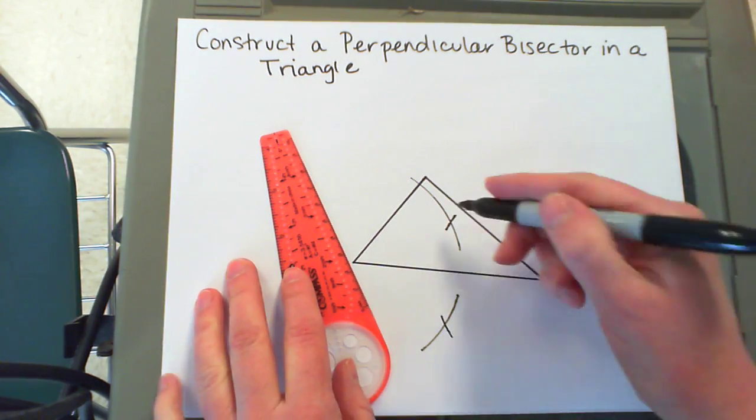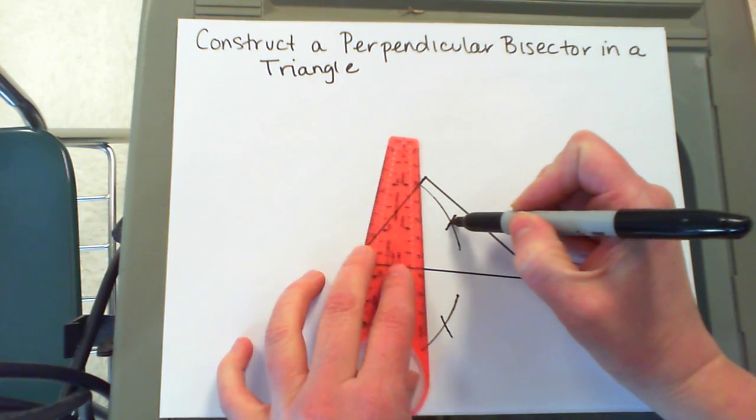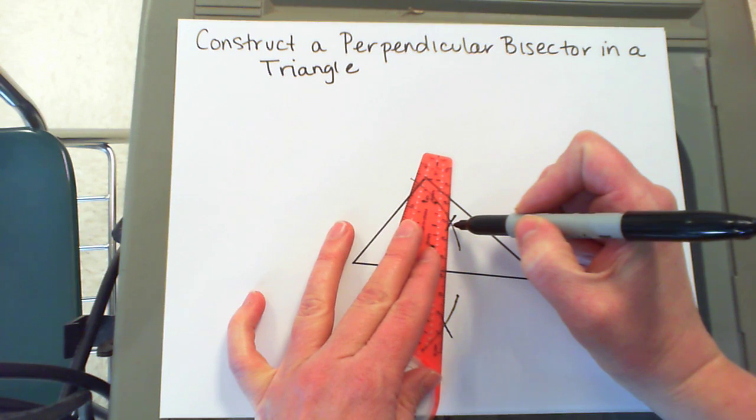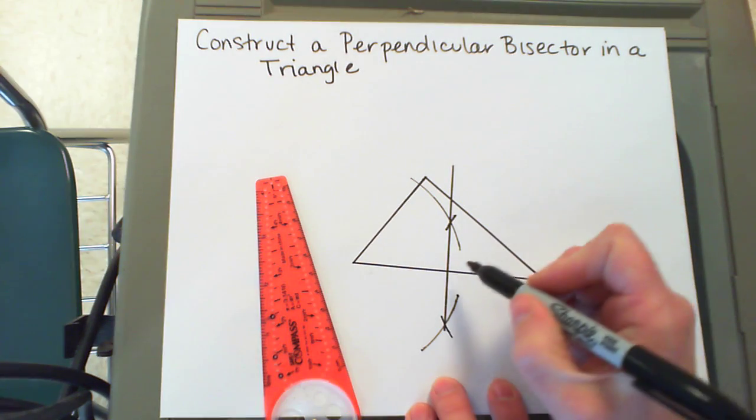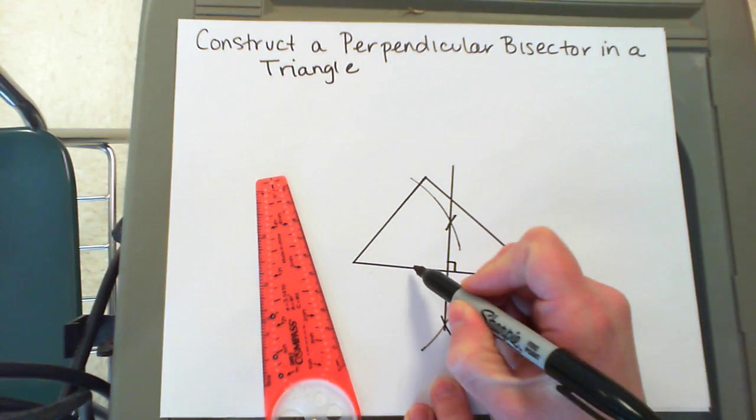Connect those two intersections to draw your perpendicular bisector. This is perpendicular to this side and splits it in half, so I'm going to add congruent markings.